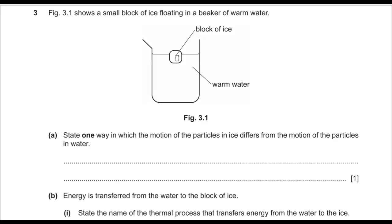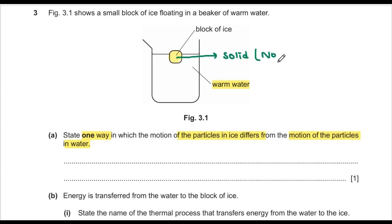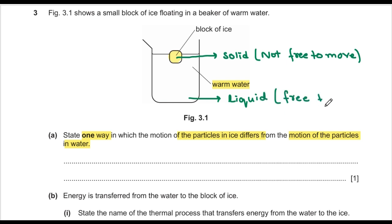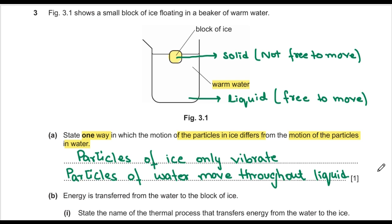Question 3 shows a small block of ice floating on warm water. State one way in which the motion of particles of ice differs from the motion of particles of water. Ice is a solid — its particles are not free to move, they can only vibrate. Water is a liquid, so its particles are free to move throughout the liquid.